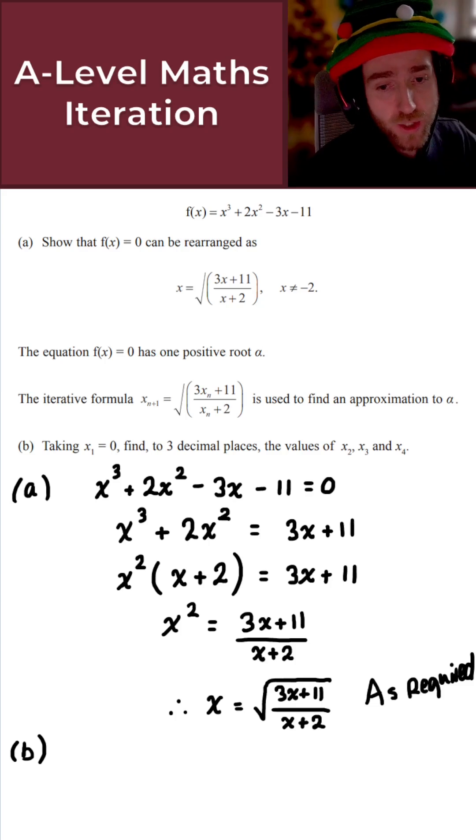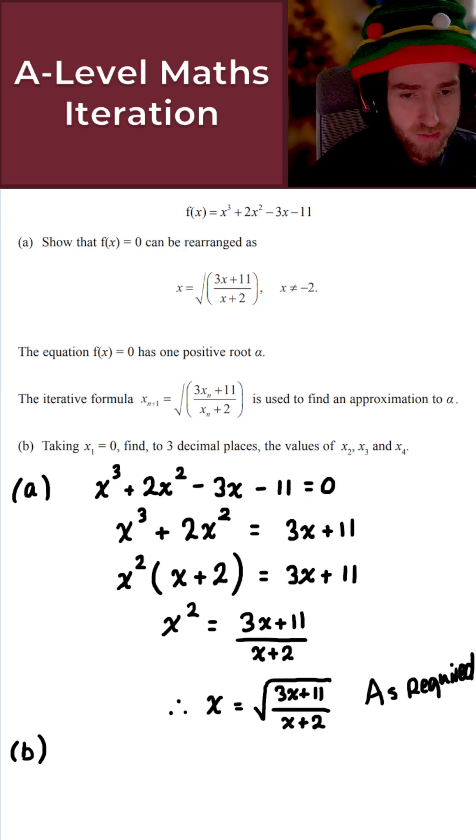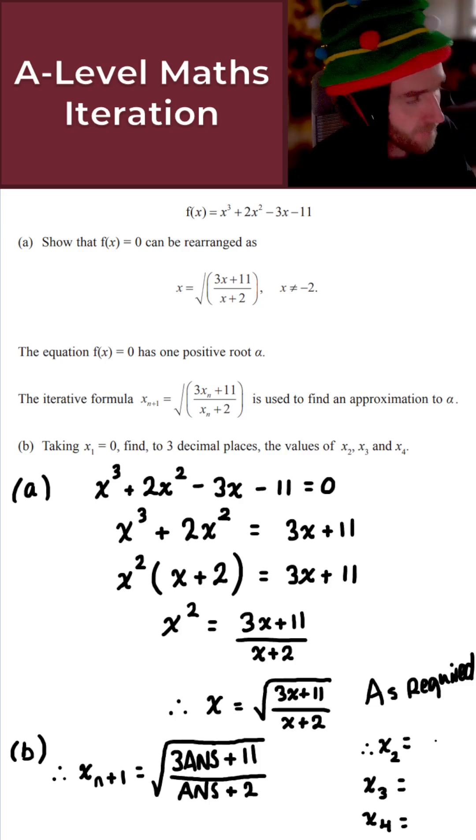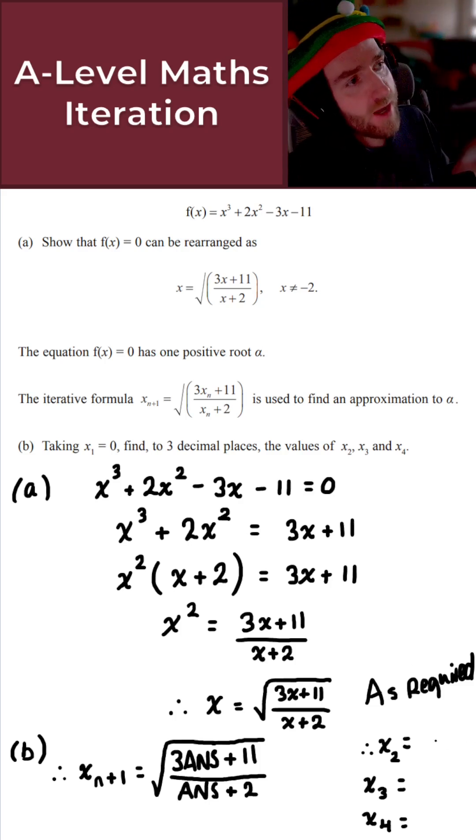This will just allow us to perform the iteration that is required. So let's just quickly do all of that together. So on your calculator, this is what it will look like. The square root of 3 times the answer plus 11 all over the answer plus 2. So grab your calculator, input all of that.